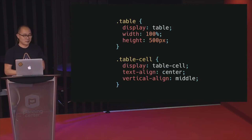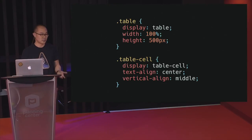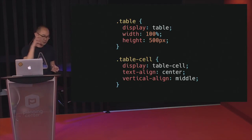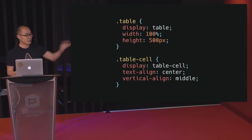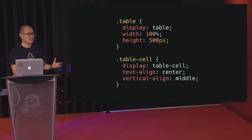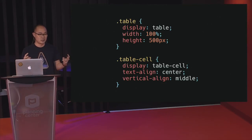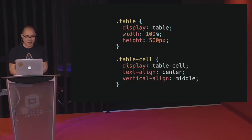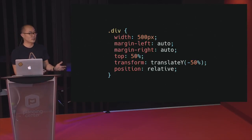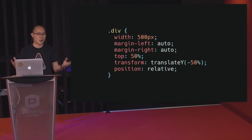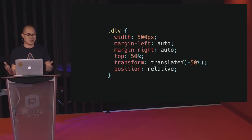For me, the biggest gripe and bane of CSS ever is vertical centering. I don't know why it is so hard to take one element and make it centered vertically, but it was nearly impossible. If you look at this example, we're using CSS to mimic working like a table, because tables do vertical centering extremely well. And with transforms, this was a more modern way of vertical centering, but it's still ridiculous. It shouldn't be this hard.